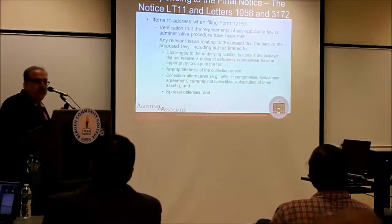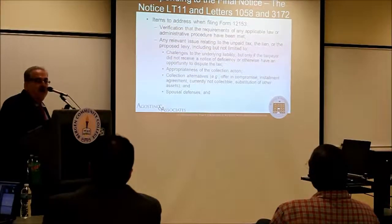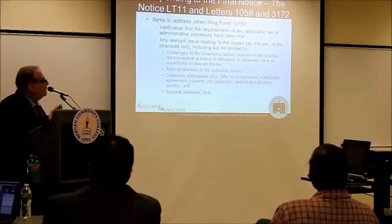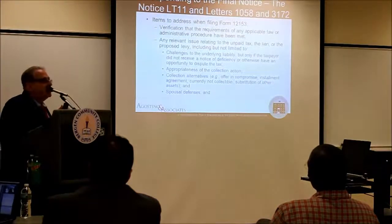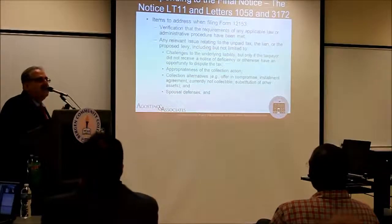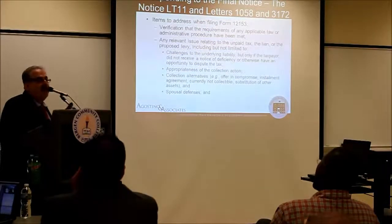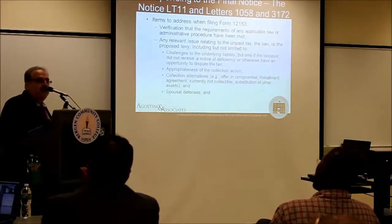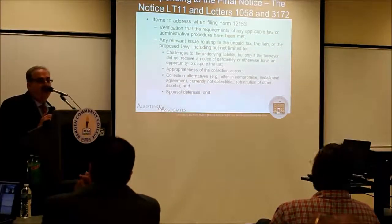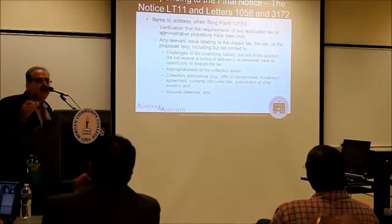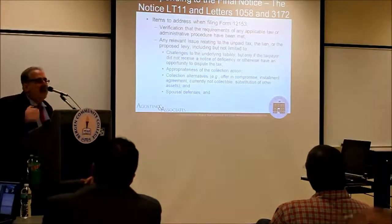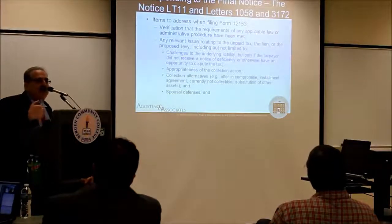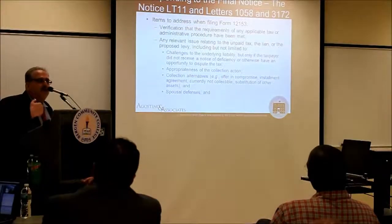Sometimes it's an installment agreement, sometimes it's an offer in compromise. The collection alternatives include some defined by the code, but be creative with others. In a trust fund recovery penalty case, if the rich guys are already paying on an installment agreement, you can say: collect from them and just suspend your action against me, because you can't collect it more than once. You have to understand the facts, understand the case, and then propose what's appropriate for your facts and circumstances.